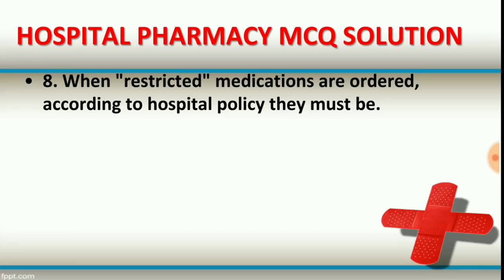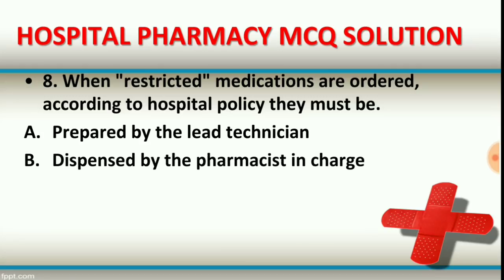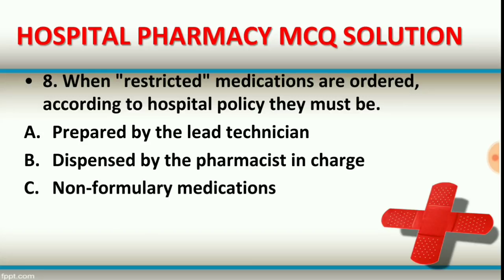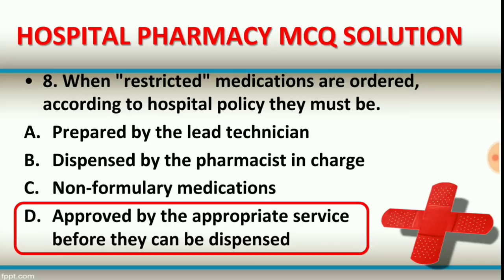Question number eight: when restricted medications are ordered according to hospital policy, they must be. Option A: prepared by a lead technician. Option B: dispensed by the pharmacist in charge. Option C: non-formulary medications. Option D: approved by the appropriate service before they can be dispensed. The right answer is option D — approved by the appropriate service before they can be dispensed.